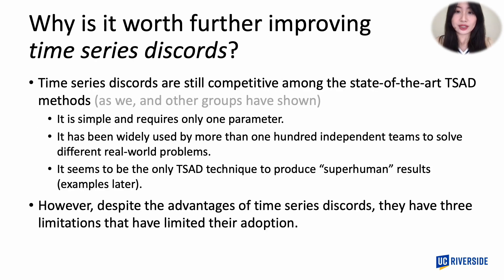So far, we have seen two important problems in anomaly detection. In this work, we are not going to invent a completely new anomaly definition. Instead, we are going to fix an existing one called time series discord. That's because time series discords are simple and require only one parameter. At the same time, they are very effective — it is the only method that has been shown to produce superhuman results, meaning it can find anomalies that would escape visual inspection. Finally, it has been widely used by more than 100 teams to solve diverse real-world problems, making it still state-of-the-art.